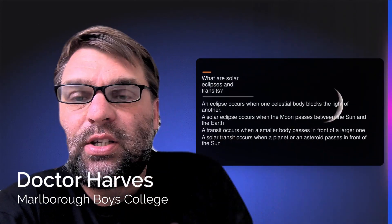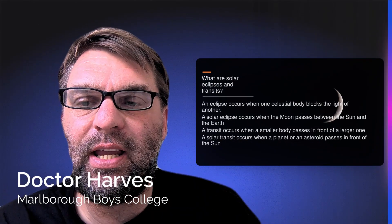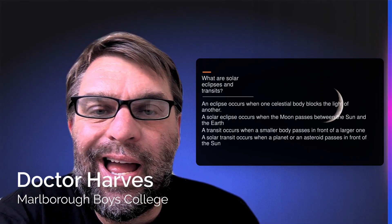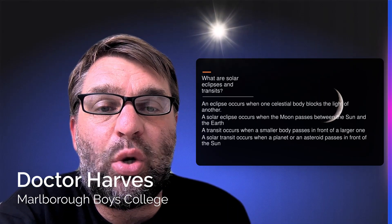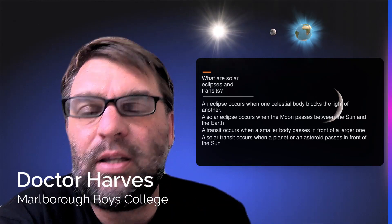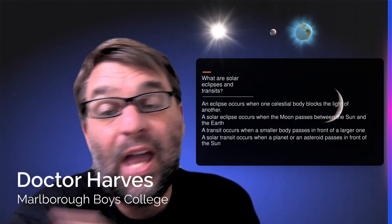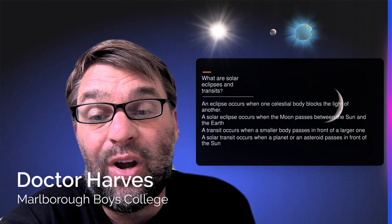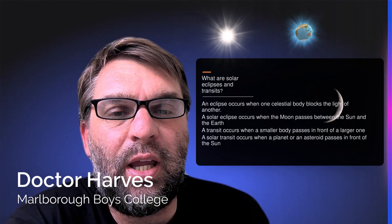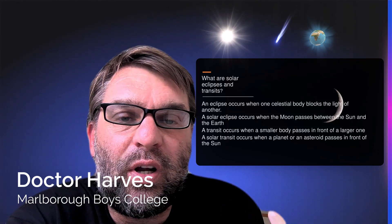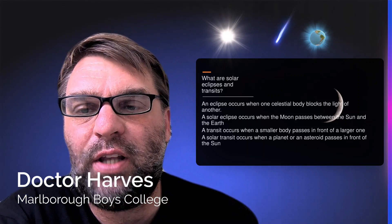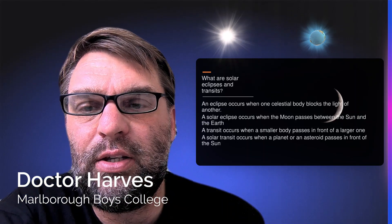The first thing to ask is: what exactly is a solar eclipse or transit? A solar eclipse occurs when the Moon passes between the Sun and the Earth, whereas a transit occurs when a smaller body — be it a comet or an asteroid — passes in front of the Sun.